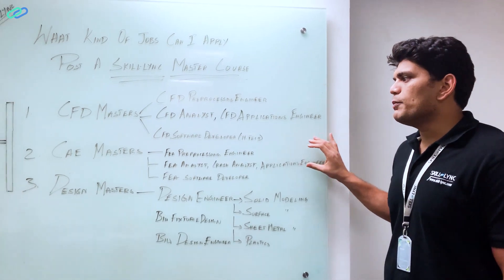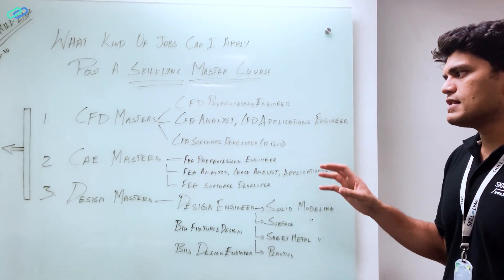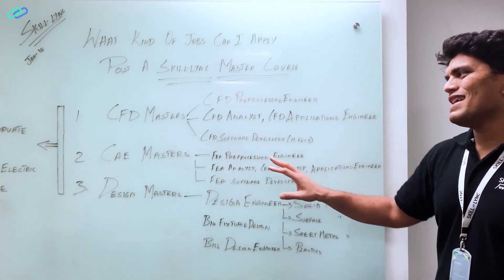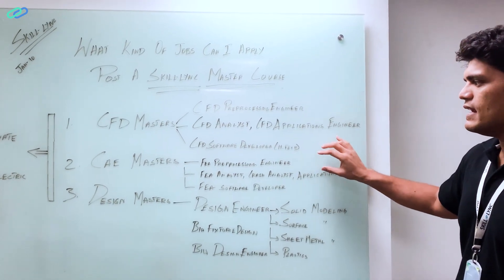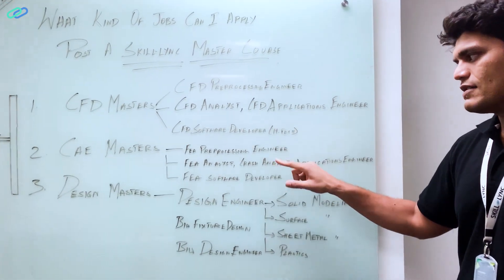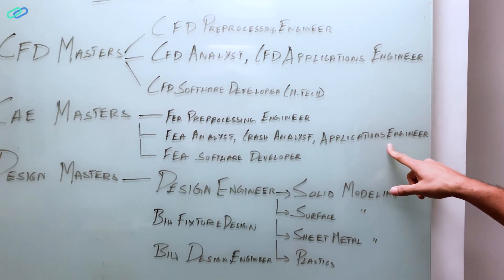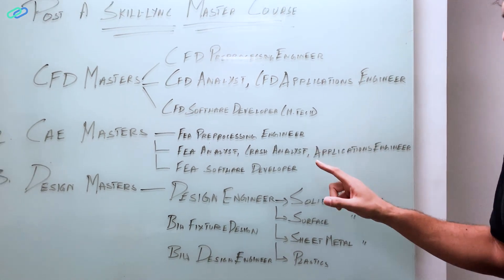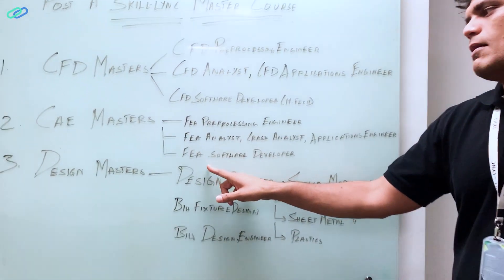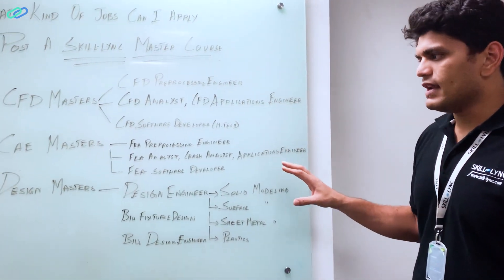So next comes our Computer Aided Engineering Masters. Any finite element analysis or solid mechanics or strength of materials masters course that we have on our Skilllink website, I am categorizing that into CAE masters. If you are taking up a CAE masters, then you can get into a FEA pre-processing engineer role, FEA analyst, or a crash analyst. You can definitely become a crash analyst after finishing our coursework, or an applications engineer. If you again have an M.Tech degree and if you are good at coding, which will also be included in our coursework, you can be applying for FEA software developer roles. So these are also the roles that are available in the industry.